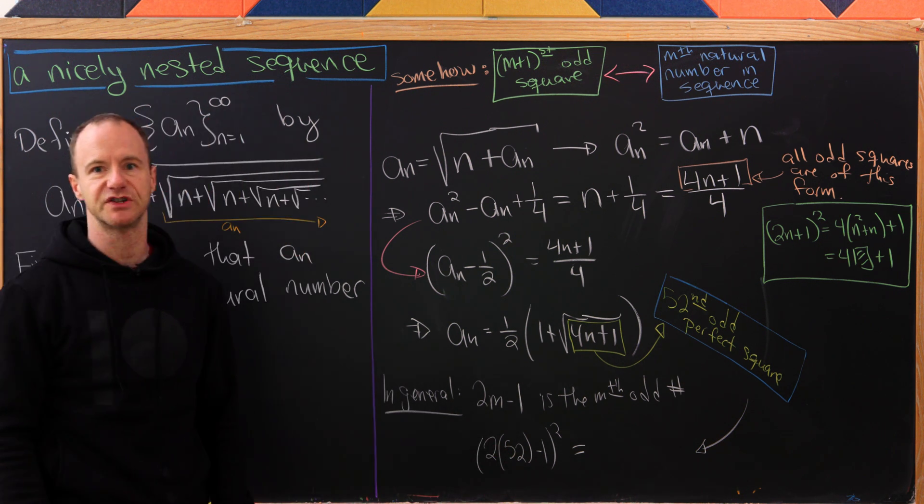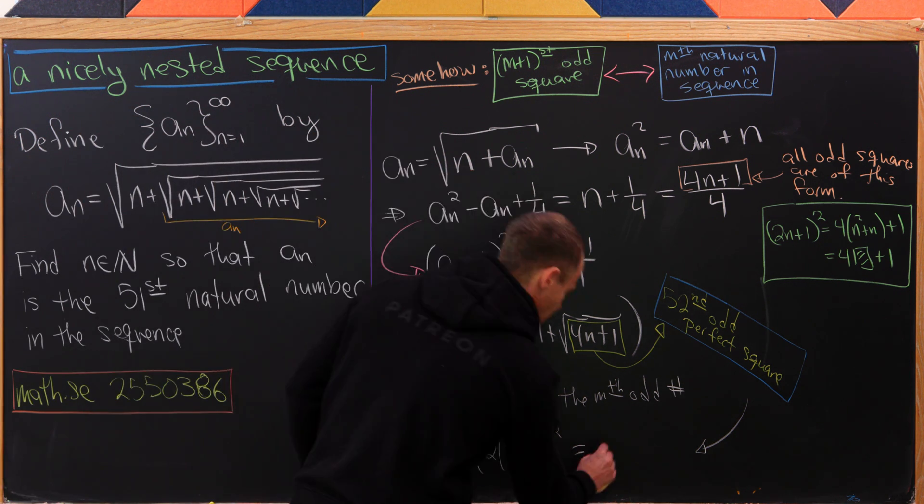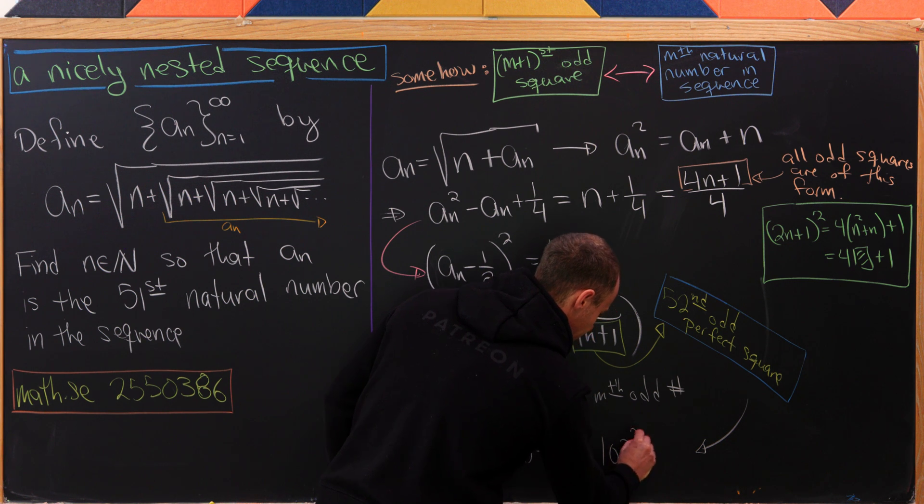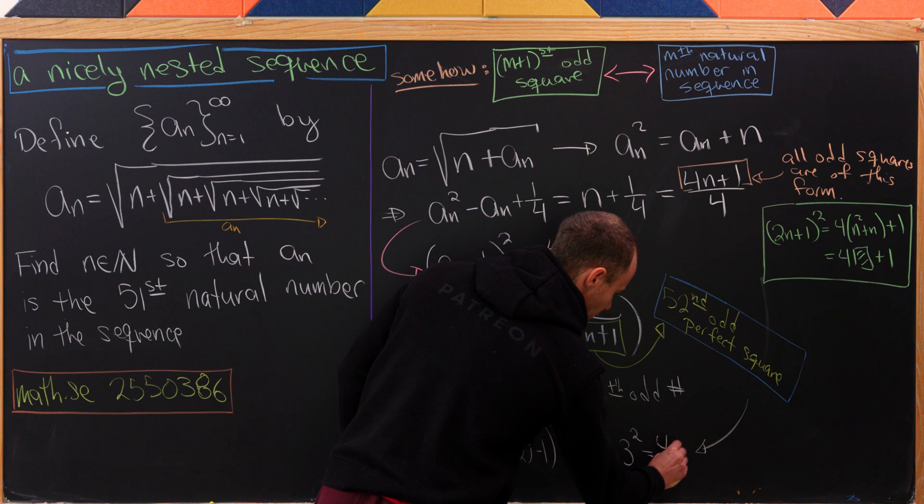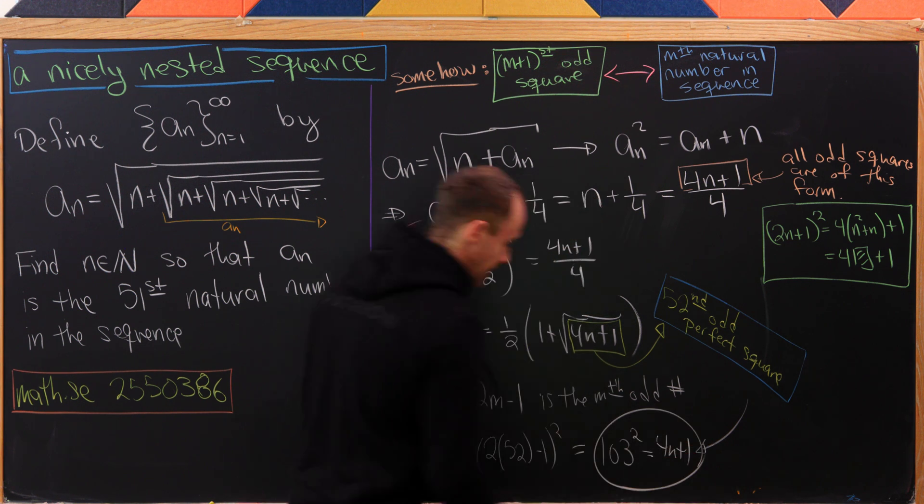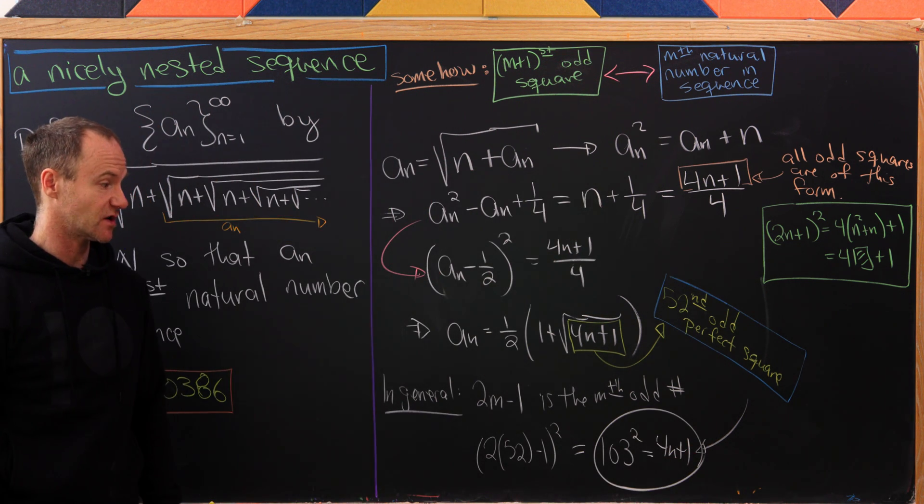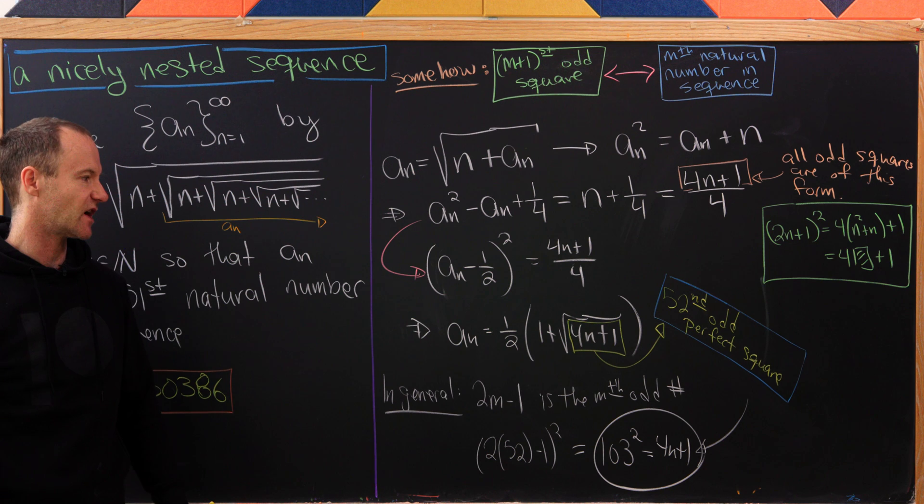Multiplying this out, we'll get 2 times 52 which is 104, minus 1 is 103. So we have 103 squared. But we need that to be equal to 4n + 1. Now we've got a nice equation that we can solve for n. Let's finish this off.